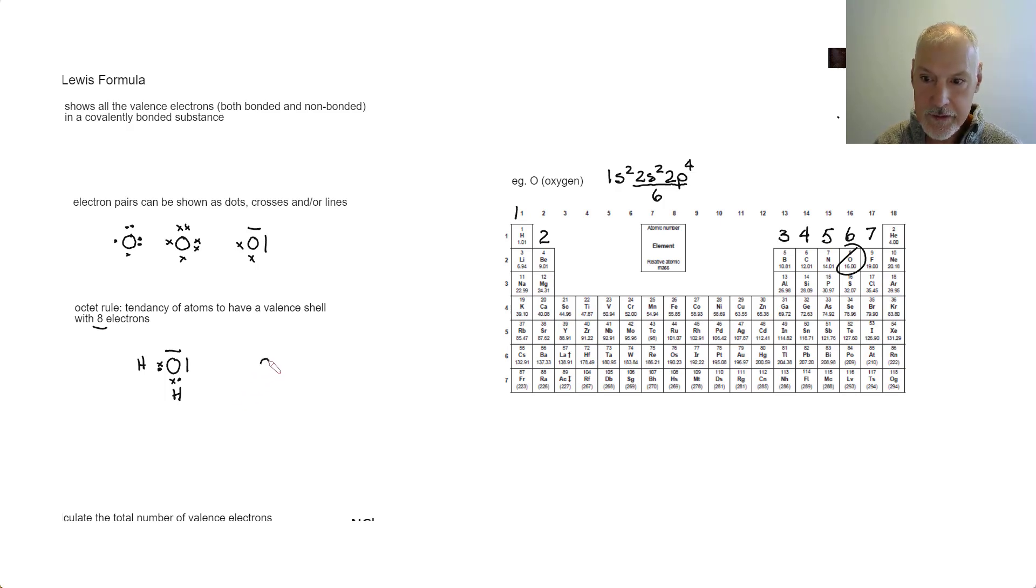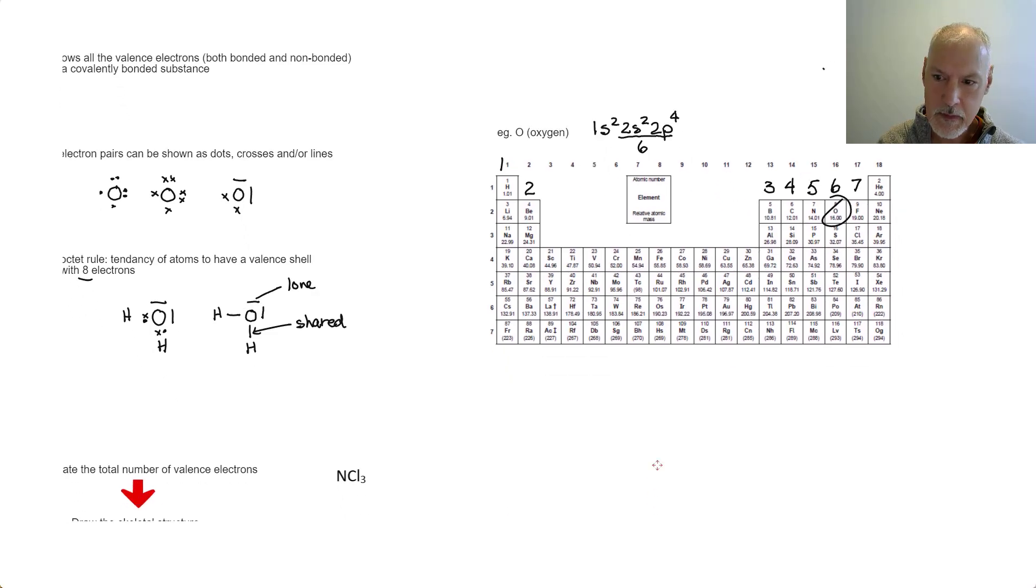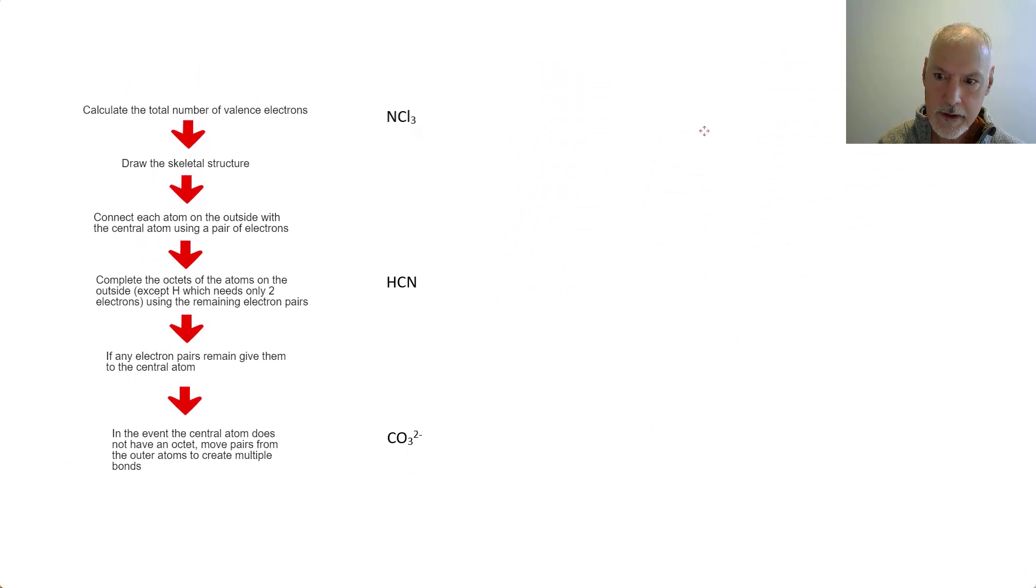So that could be considered a Lewis formula for the water molecule. Again, I could also draw it using lines. And a line between atoms indicates a pair of electrons being shared between atoms. So this line represents what we call a shared pair of electrons. And this represents what we call a lone pair of electrons. Again, you can use dots or crosses. But remember that lines represent pairs of electrons.